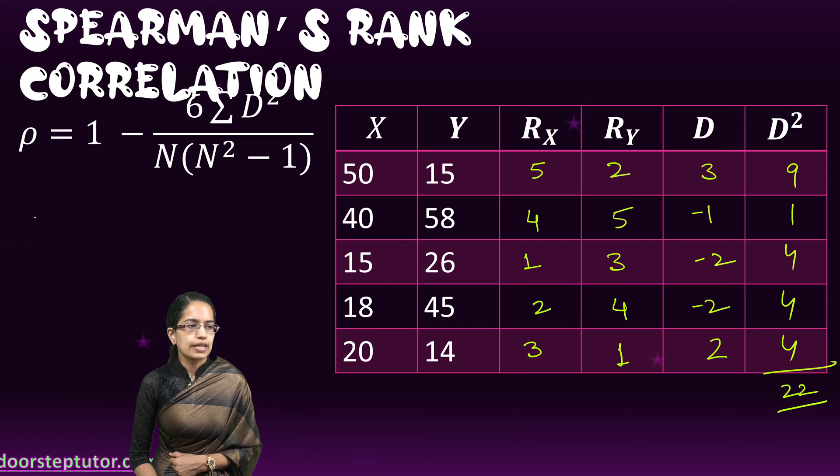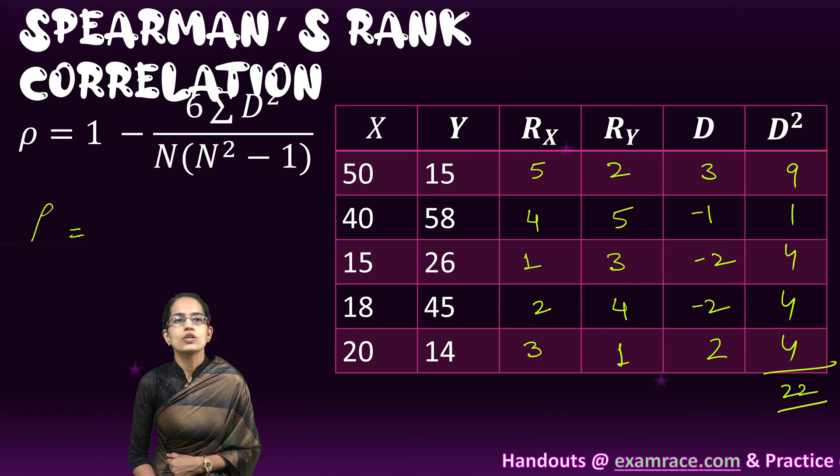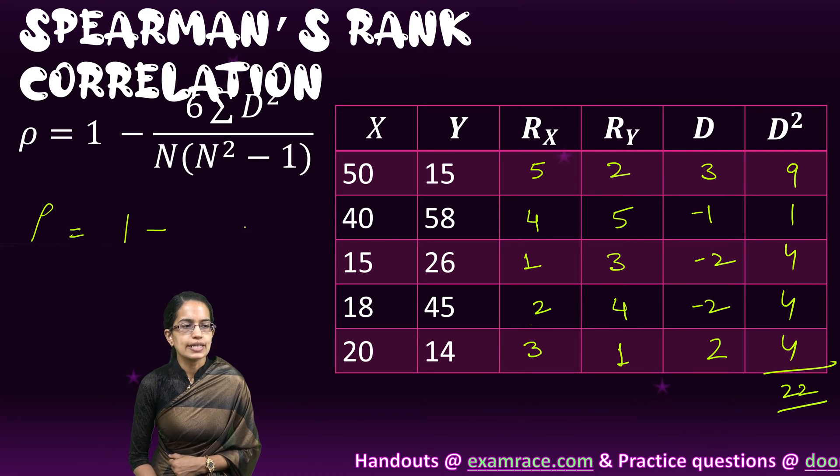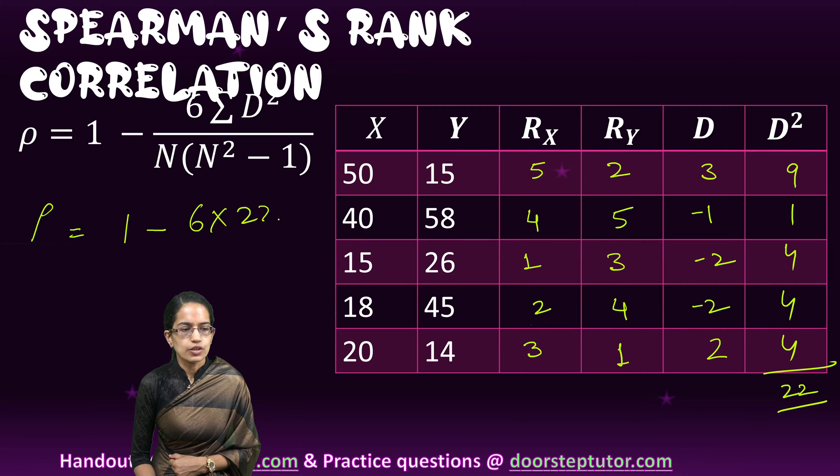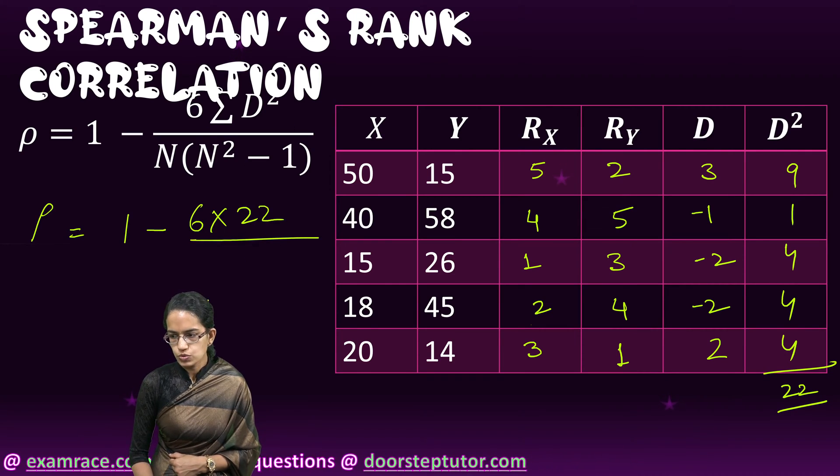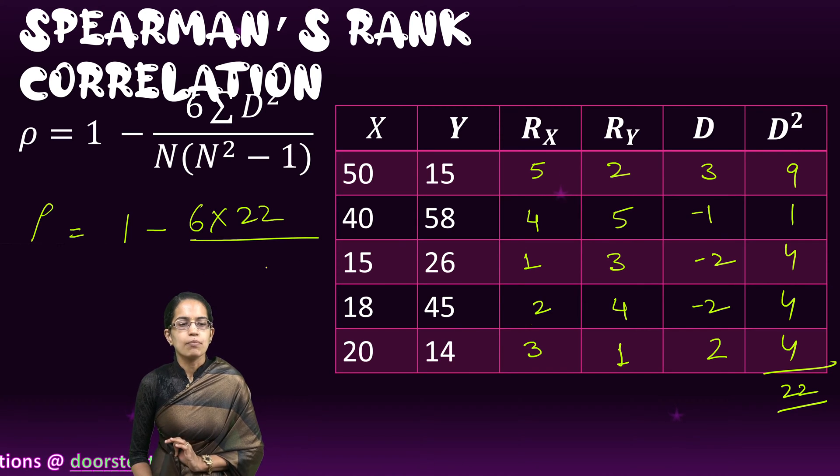Now I apply the formula. The Spearman's rank order correlation is represented by the sign rho. This rho or the correlation is 1 minus 6 multiplied by 22, which is the summation of d squared, summation of the difference squares. And n is the number of pairs.